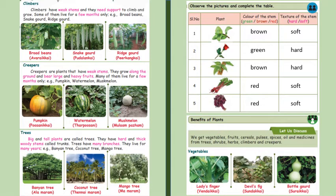What are the benefits of plants? We get vegetables, fruits, cereals, pulses, spices, oil and medicines from trees, shrubs, herbs, climbers and creepers.